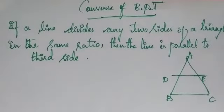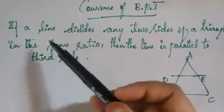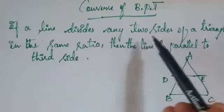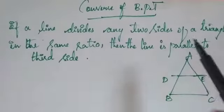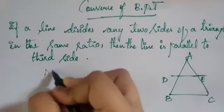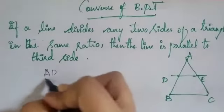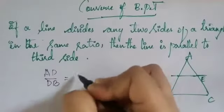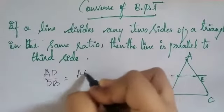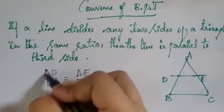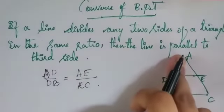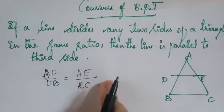Next is the converse part of BPT — Basic Proportionality Theorem. The theorem states: if a line divides any two sides of a triangle in the same ratio, that is AD/DB = AE/EC, then the line is parallel to the third side.